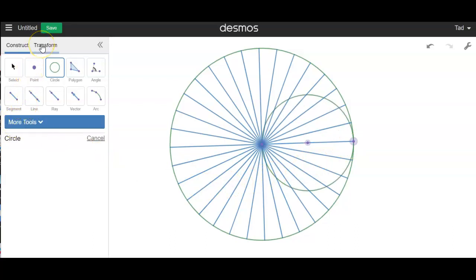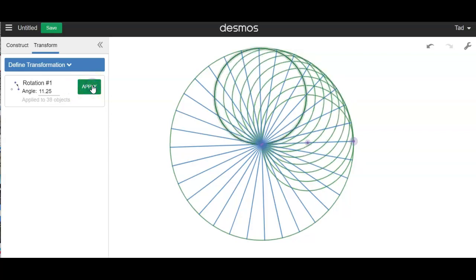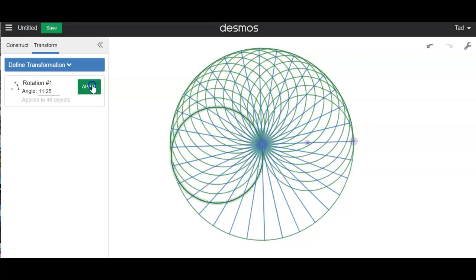And let's go back to transform. And what I want to do is actually transform, rotate this circle right here. So I'm going to select that circle and I'm going to apply our rotation of 11.25 degrees 31 times. You can see that our pattern is starting to take shape.